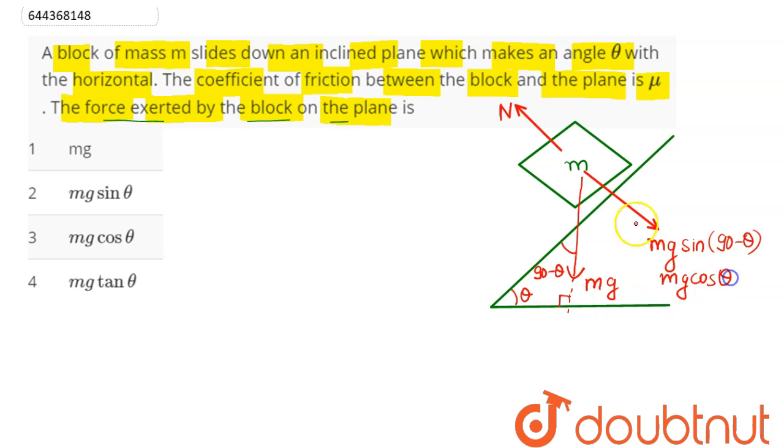This is the force exerted by the block on this inclined surface perpendicular to the incline. The force exerted by the block on the plane is normal, which is equal to Mg cos theta.